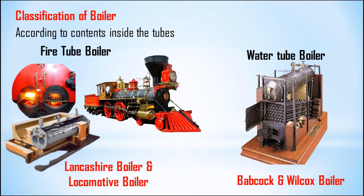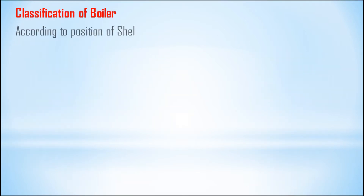Examples of fire tube boilers are the Lancashire boiler and the locomotive boiler. In olden days we used the locomotive boiler in railway locomotive engines, but nowadays we use diesel engines and electric engines. An example of a water tube boiler is the Babcock and Wilcox boiler.